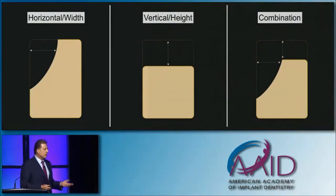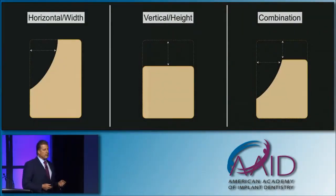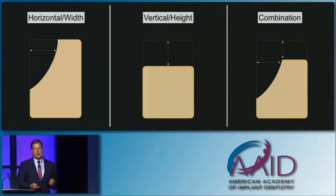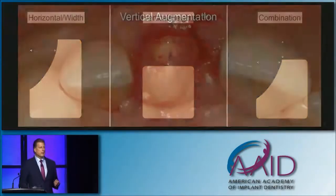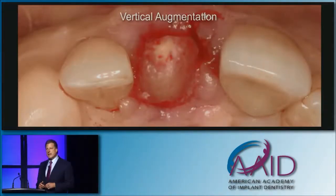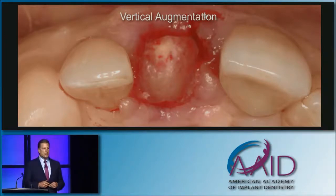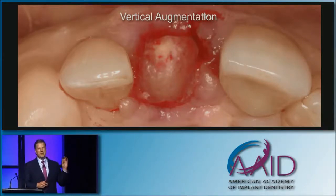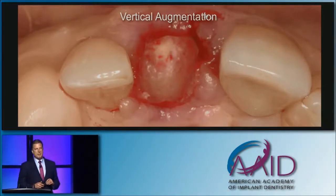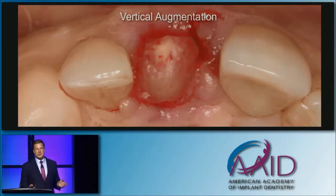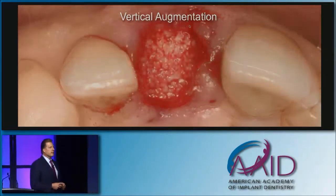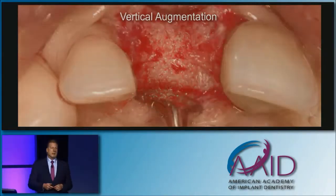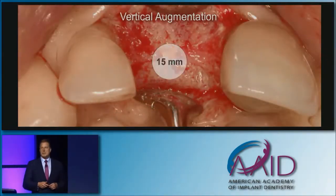We manage horizontal defects, vertical defects, and most often three-dimensional recombination type defects. Some of you have seen this sleight of hand before — I'm going to do a 15-millimeter vertical augmentation using bone substitutes with no membrane, no biologics, no autogenous bone. I place the graft, wait four months, and grew 15 millimeters of vertical bone.